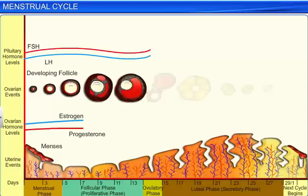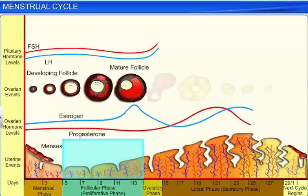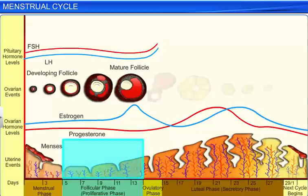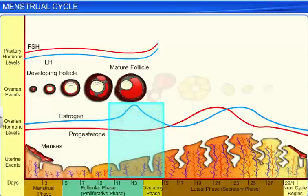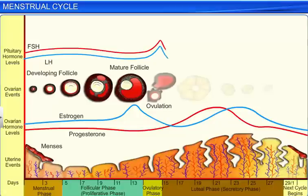The release of LH and FSH keeps increasing, and during the follicular stage, these two hormones stimulate the maturation of the primary follicle into the Graafian follicle. Moreover, LH and FSH stimulate the maturing follicles to release estrogen, a hormone that helps in the proliferation of the endometrium. The increased levels of estrogen, in turn, cause the anterior pituitary gland to release a surge of LH and FSH, so much so that by the ovulation stage, the levels of FSH and LH in the blood are at their peak.